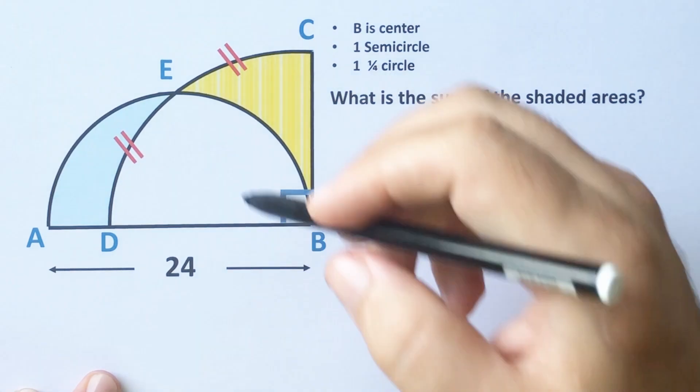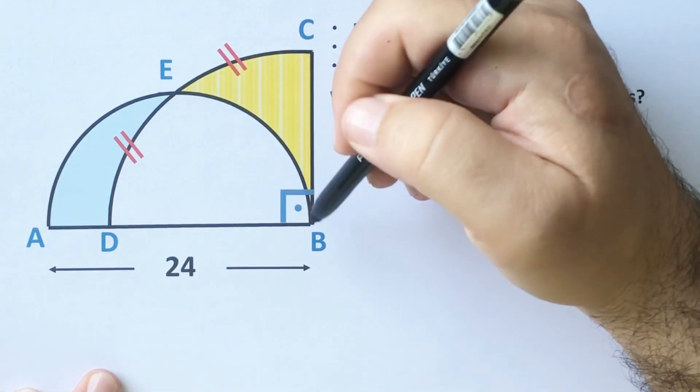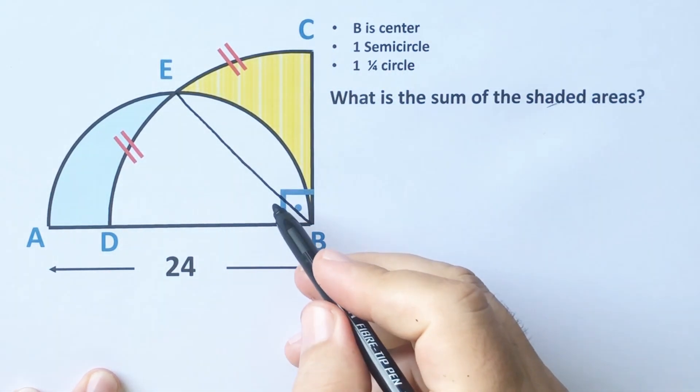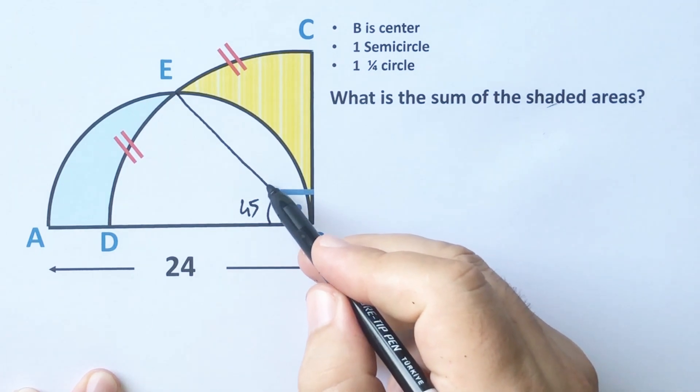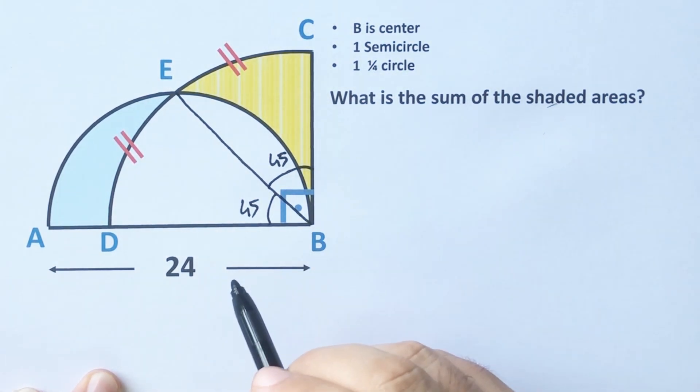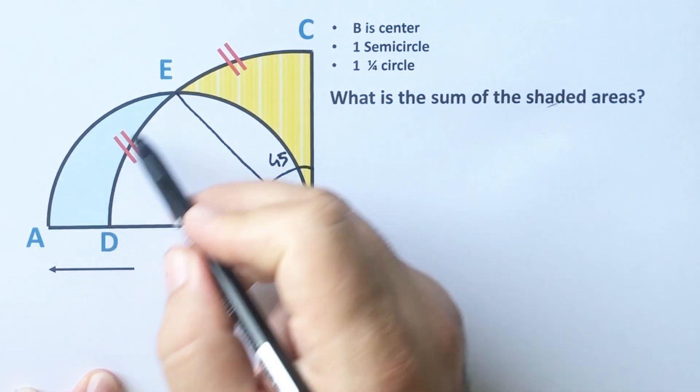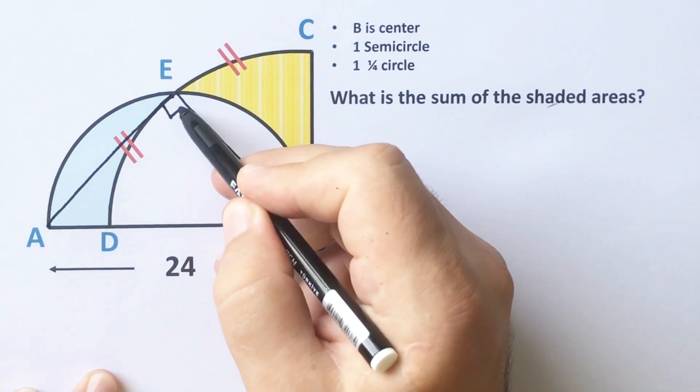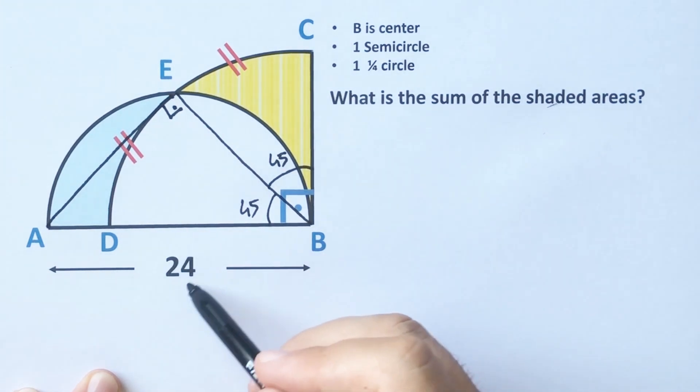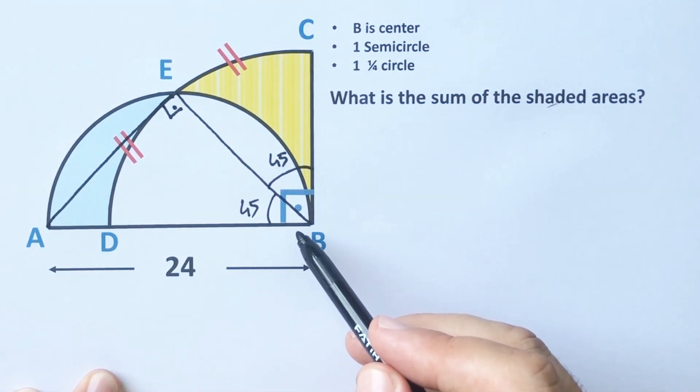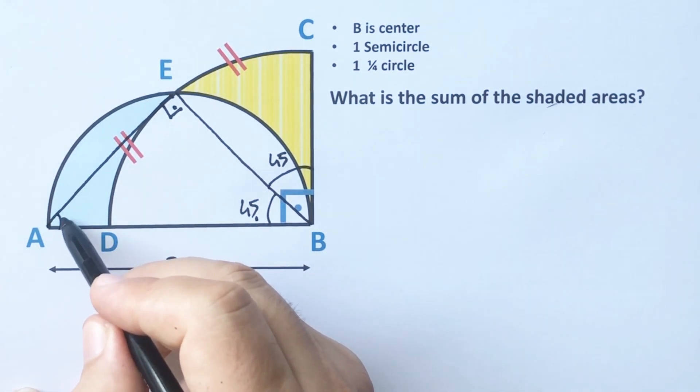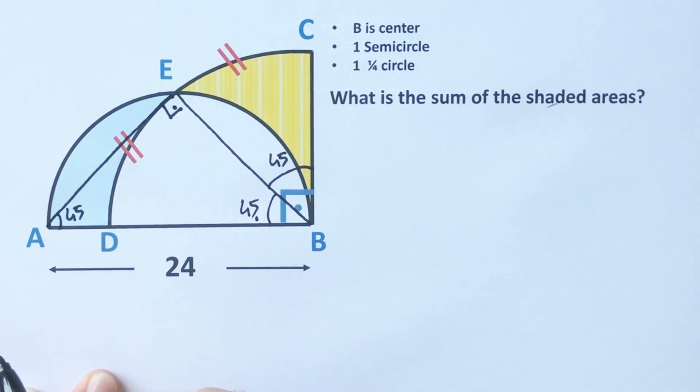First, if we extend E and B point like this, these are 45 degrees, right? Because they have the same arc. And then if we extend A and E point like this, here must be 90 degrees because it's opposite the diameter.